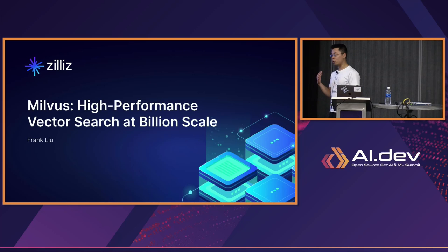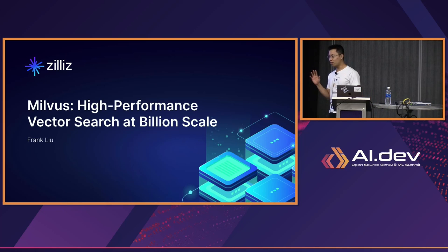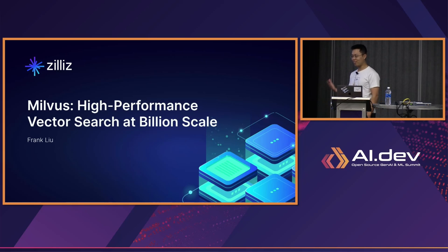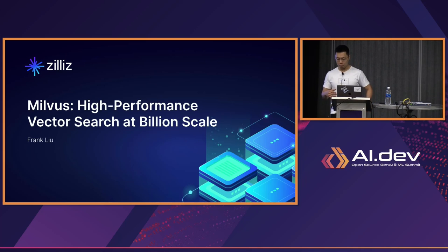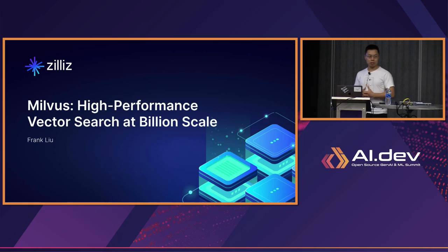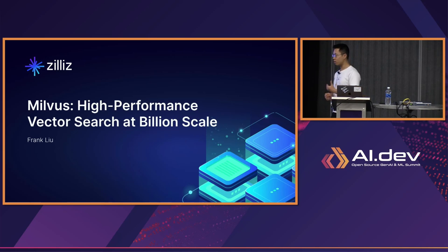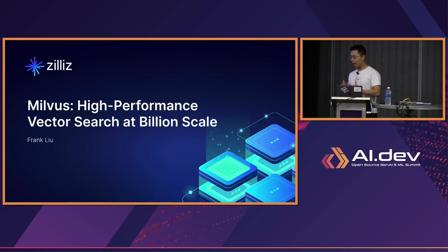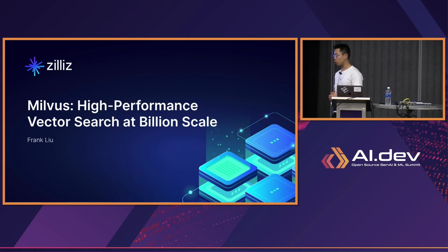Before I dive into the meat of this talk, I want to get a quick show of hands: how many of us are familiar with vector search and vector databases more broadly? What Milvus is, and what I hope you take away from this talk, is why we need a vector database that's really, really scalable — why we need something that supports billion scale, high performance, has a lot of production readiness built into it, and how we build that. Why is it difficult to build that into a vector database, and why do we need to build something from the ground up to support vectors?